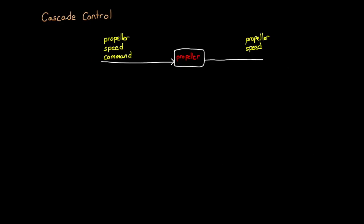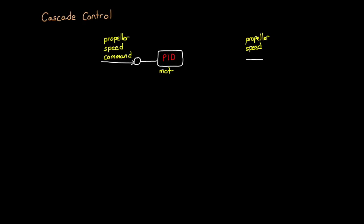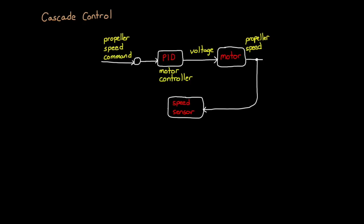But now let's focus in on the propeller itself. The propeller command is the input, and the resulting speed is the output. If you recall videos 5 and 6 in this series, we talked about motor control — and what is a propeller other than a motor with a fancy bit on one end? So instead of a single block labeled propeller, this is actually a small feedback loop itself. There's the command, which goes through its own comparator, and the resulting error is fed into a PID controller. The output of the controller is voltage, which is applied to the motor, causing it to spin. The motor speed is measured by a sensor and fed back into the comparator.